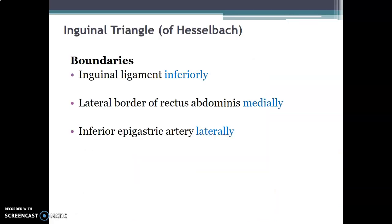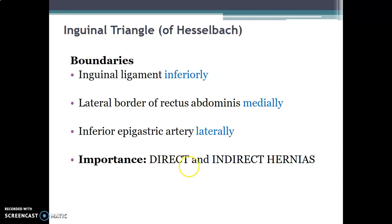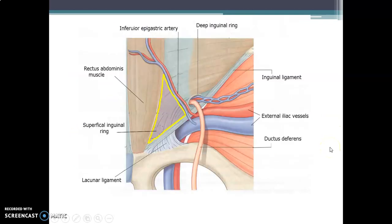Hesselbach's triangle has three boundaries. Inferiorly, you have the inguinal ligament. Medially, you have the lateral border of the rectus abdominis. And laterally, the triangle is formed by the inferior epigastric artery. This triangle is clinically important because it allows you to distinguish between direct and indirect inguinal hernia. Medially — lateral border of rectus abdominis; laterally — inferior epigastric vessels; inferiorly — inguinal ligament.